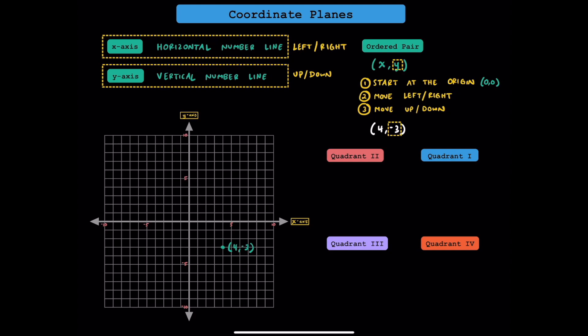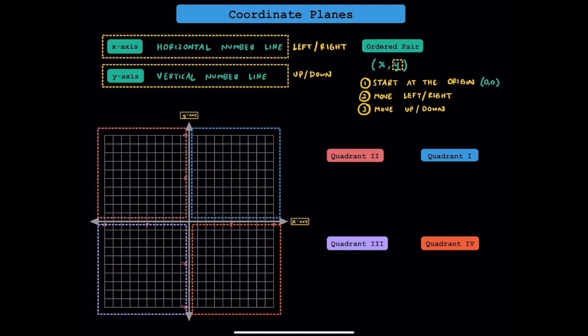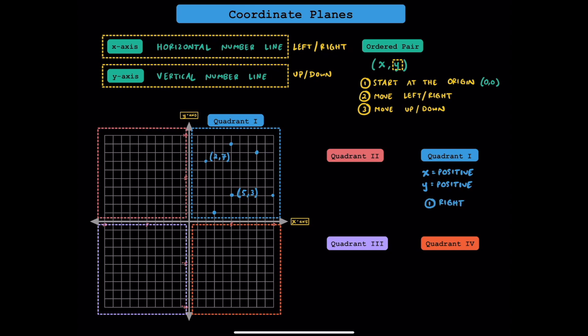Now notice how the x-axis and y-axis divide the whole coordinate plane into four sections. The first one we'll talk about is quadrant 1. Quadrant 1 is located in the top right and is used the most often. The reason why we use it the most is because x and y are both always positive here. To plot a point in quadrant 1, you'll always move to the right and move up.